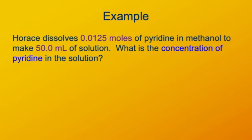Here's an example of a problem we might work using that formula. Horace is dissolving 0.0125 moles of pyridine in methanol to make 50 milliliters of solution. What's the concentration of pyridine in the solution? You might not know what pyridine is — it doesn't matter, because we're given N, the number of moles, and V, the volume. That's all we need to calculate the concentration.